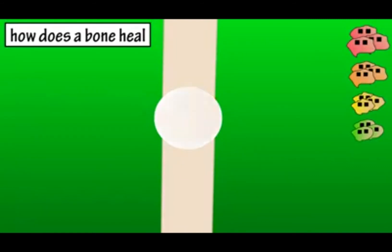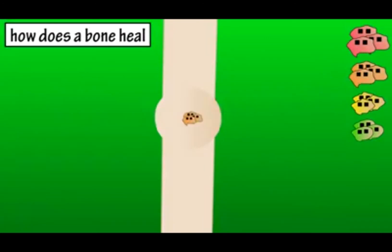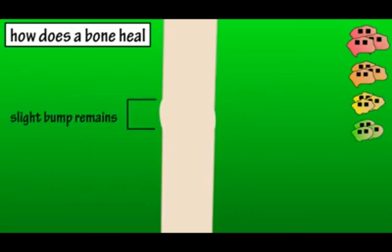This soft callus then hardens into a bony callus. This usually results in excessive bone tissue, so the osteoclasts reabsorb some of the extra tissue. When this process is finished, it's usually not 100% perfect, so a slight bump may remain at the spot of the break. The fracture is then healed and healthy.